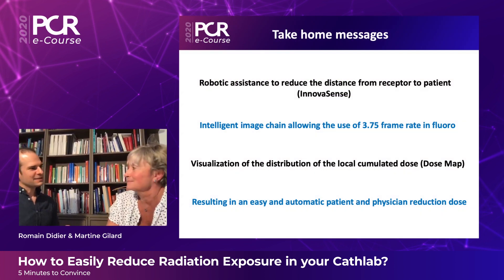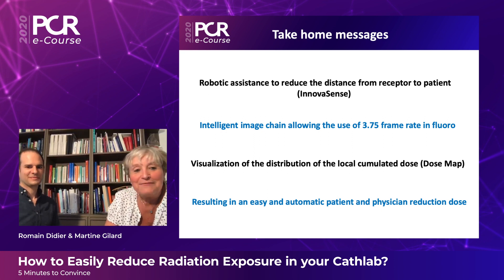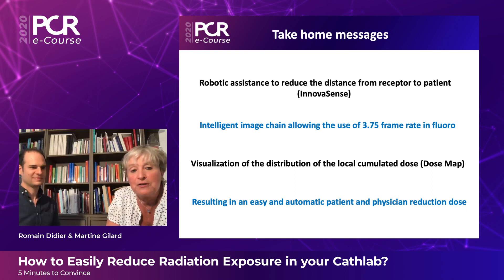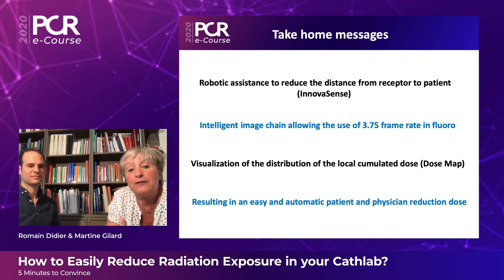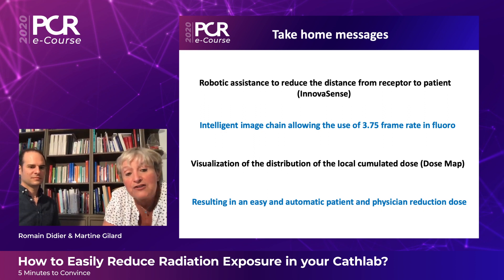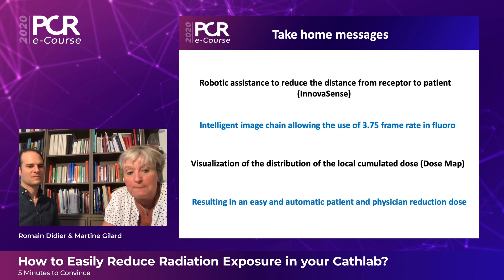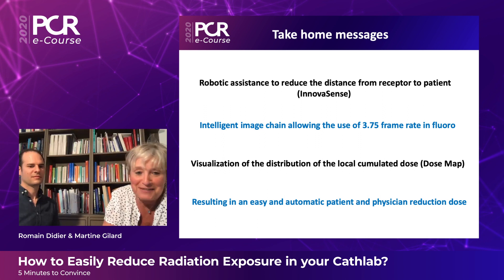So now it's time to summarize. We have seen robotic assistance to reduce the distance from receptor to patient. We have also seen the importance of the intelligent image chain, allowing the use of a 3.75 frame rate in fluoroscopy. And we have seen the visualization of the distribution of locally accumulated dose, which is the dose map — resulting in easy and automatic dose reduction for both patient and physician. Thank you, Martin.